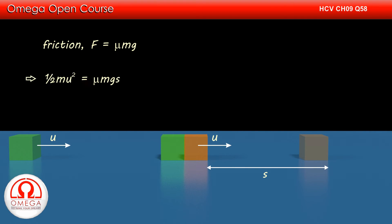Therefore, the energy dissipated by the friction on the block is μmgs. This work must be equal to the kinetic energy of the block, hence ½mu² must be equal to μmgs. Dividing both sides by ½m, we get u² is equal to 2μgs.